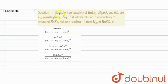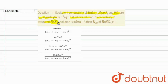The question says that the equivalent conductivity of BaCl₂, H₂SO₄, and HCl are x1, x2, and x3 respectively at infinite dilution. If the conductivity of saturated BaSO₄ solution is x, then find the solubility product of BaSO₄.